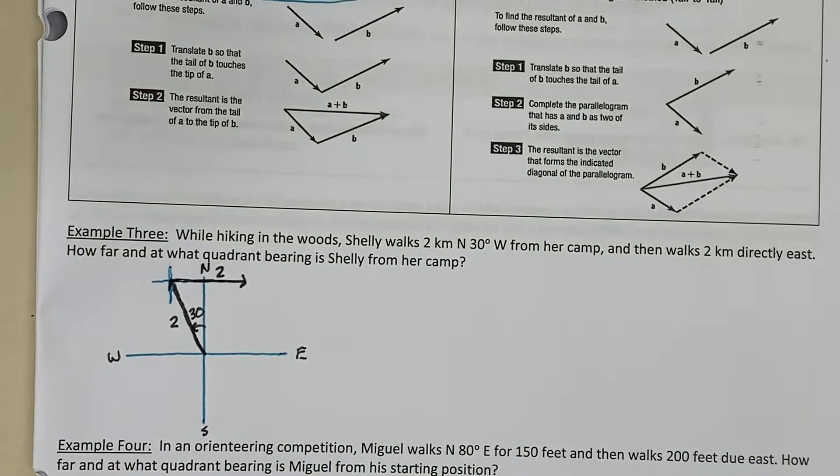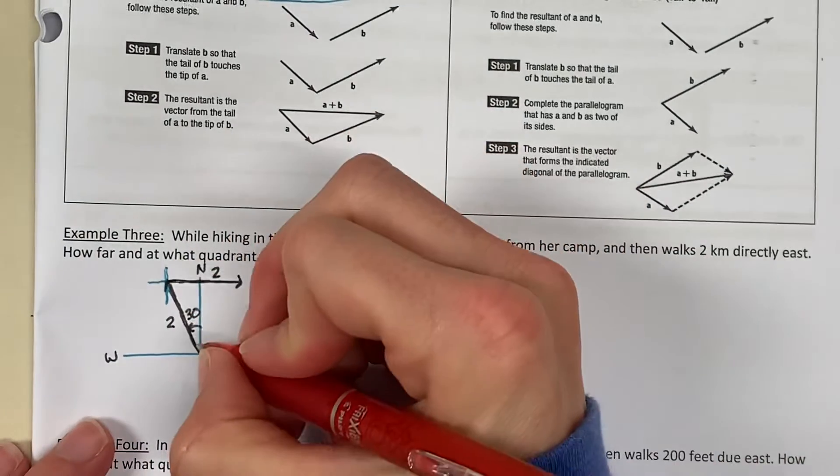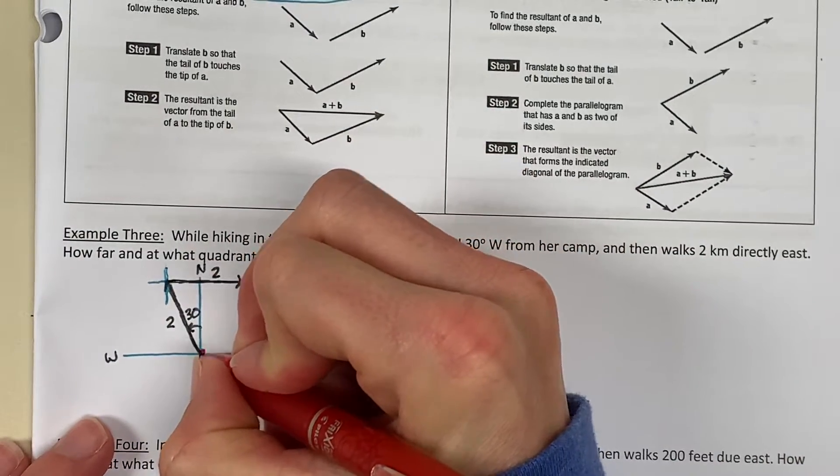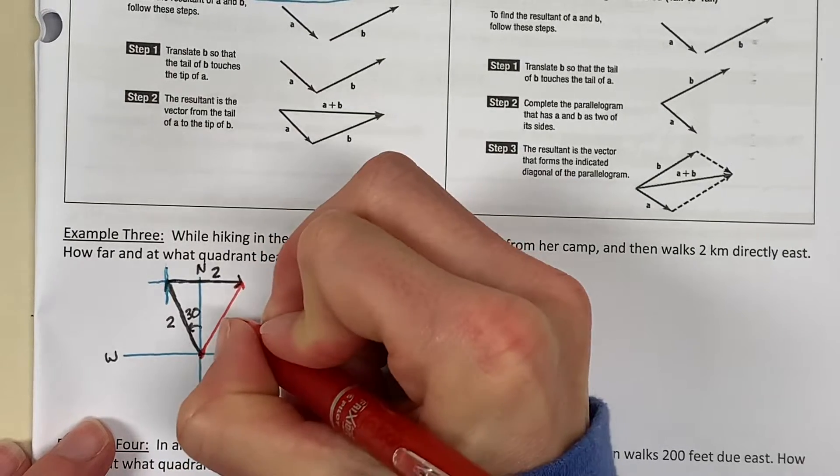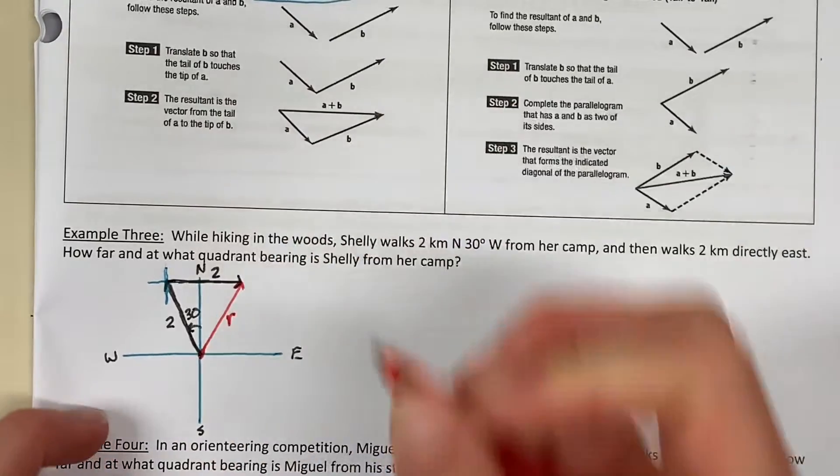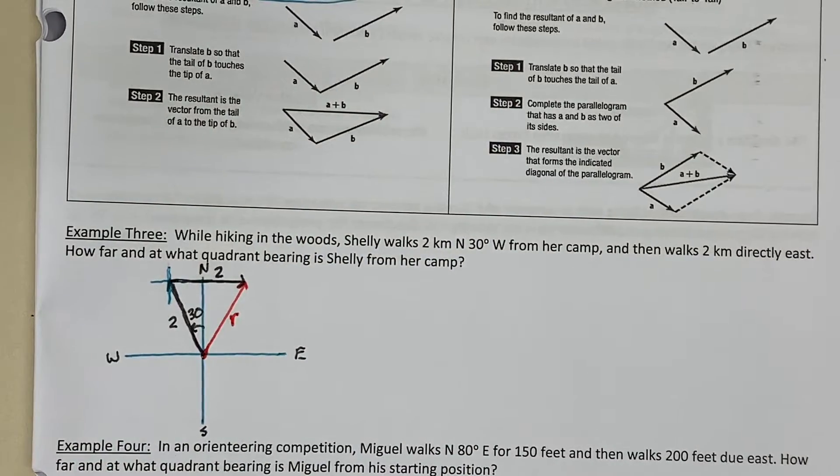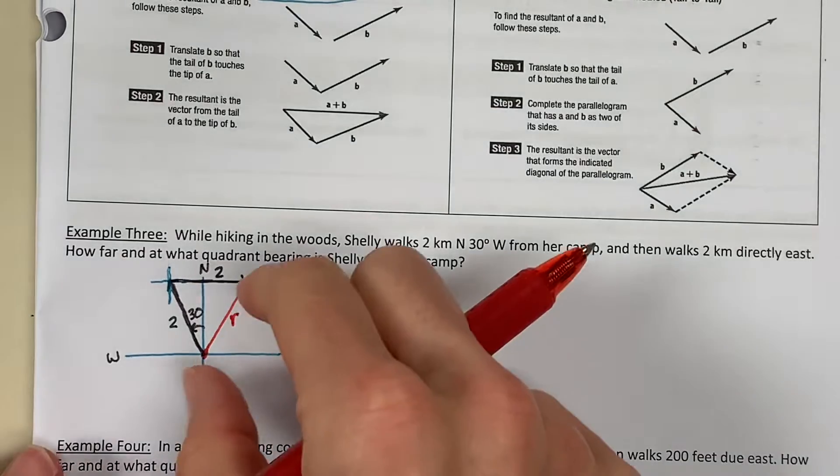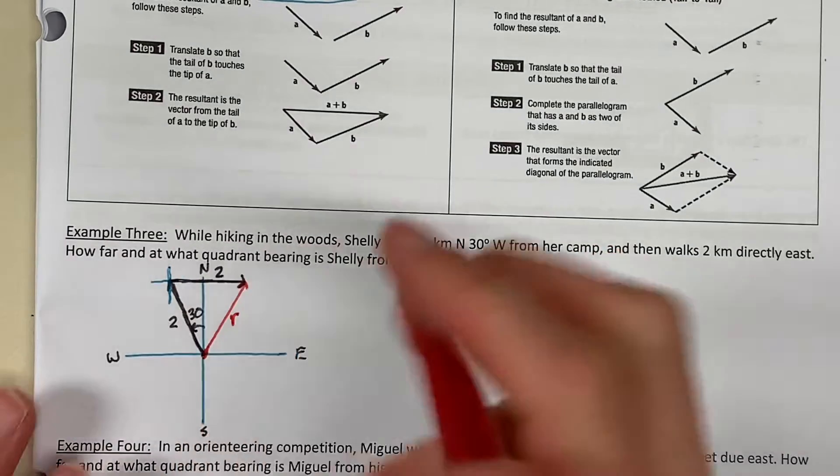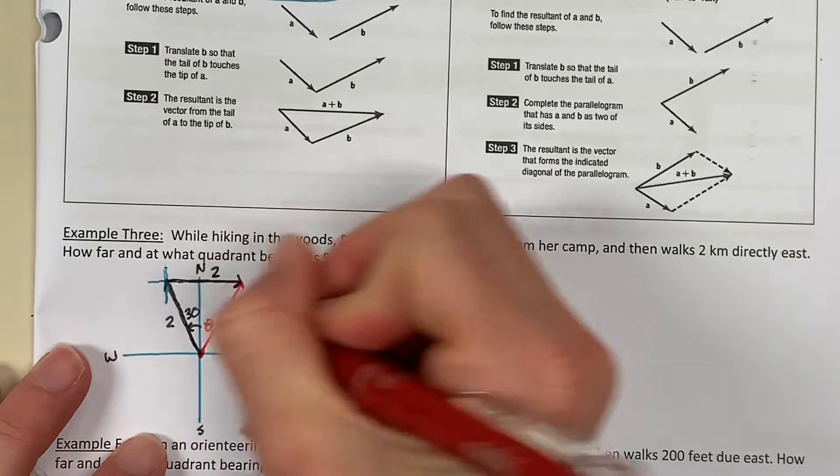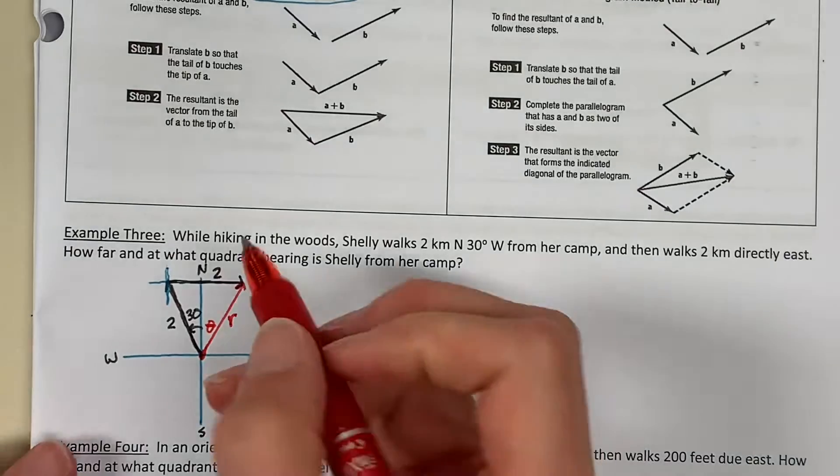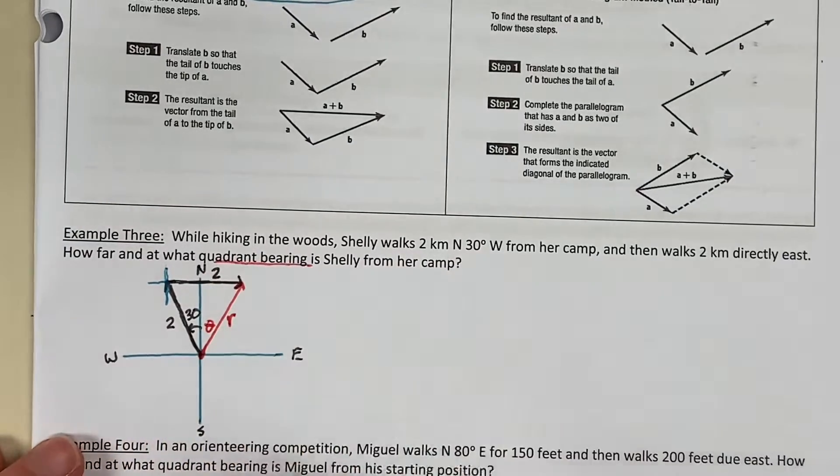Now, we need to figure out how far she is from camp. This is our resultant vector. So, I'm going to go from where she started to where she ended. And this is R. This is what I'm trying to find. Not only do I need to know how far she is, what distance, but I also need to know this bearing from north. And I'm looking for a quadrant bearing.